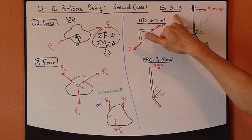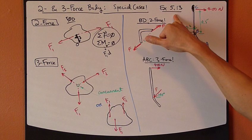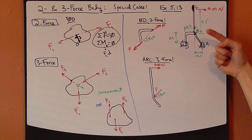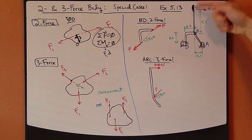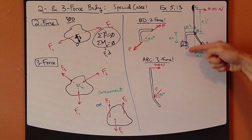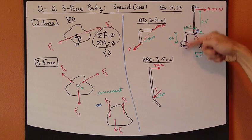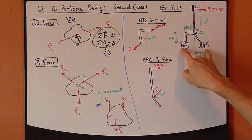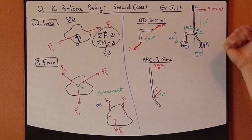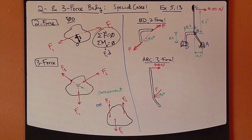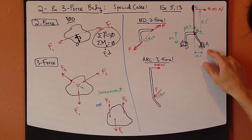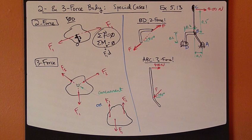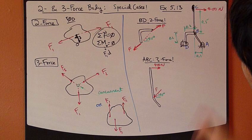Let's look at an example — Example 5.13 in the textbook. We have this lever, which consists of two pieces: piece A-B-C and another piece B-D. They link up together at point B. Point D and point A are both pivoted and free to rotate. You're asked to find the reaction force at A. There are a couple of ways to analyze it. RAX and RAY are the unknowns. We want to choose a free-body diagram that allows us to find the reaction forces.